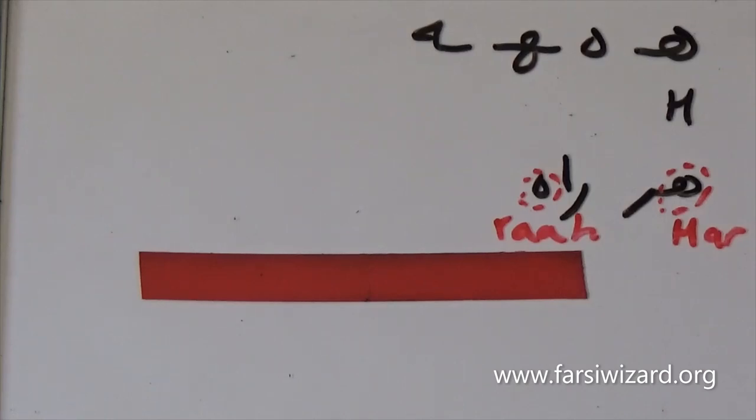So here we're using this particular version, looks like a drop. We use it when the letter he again appears at the end of a word and is not connected to the previous letter.